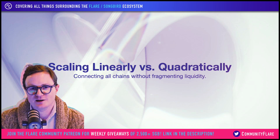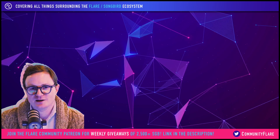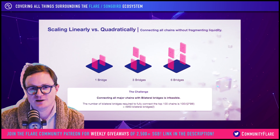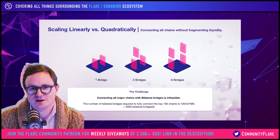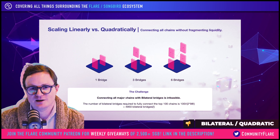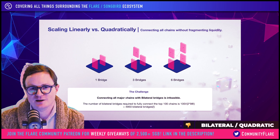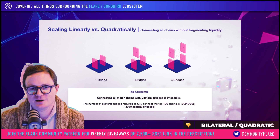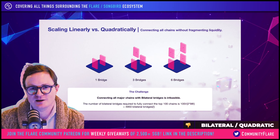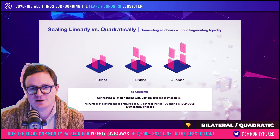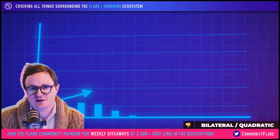This brings us to one of the most important parts of what we're building: building linearly rather than quadratically. If you want to build bilateral bridges to connect two chains, you need one bridge. To connect three chains, you need three bridges. To connect four chains, you need six bridges. As you can see, those numbers are going up — and they're not going up linearly.